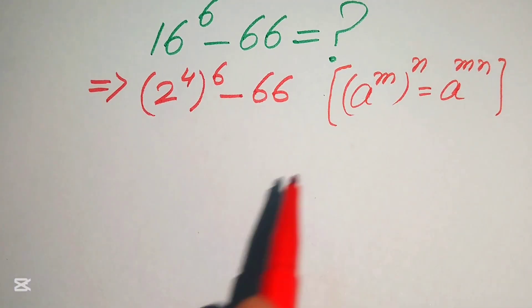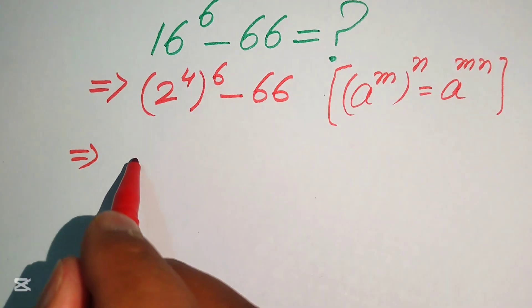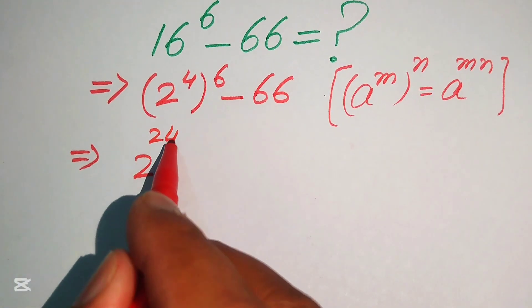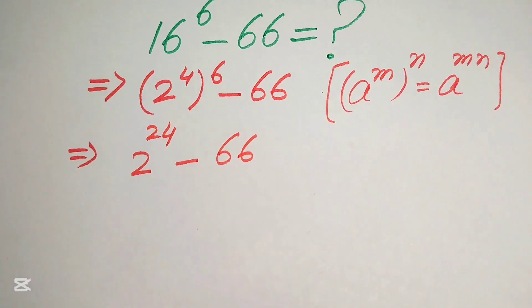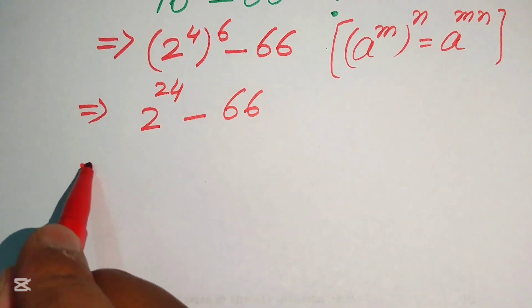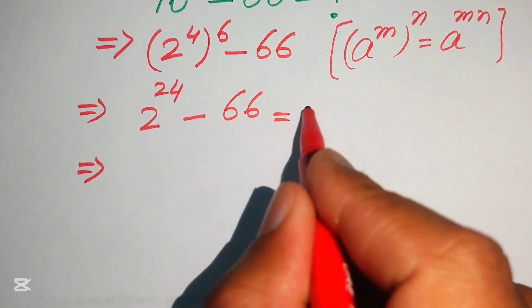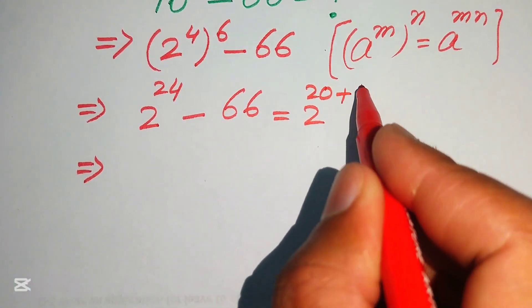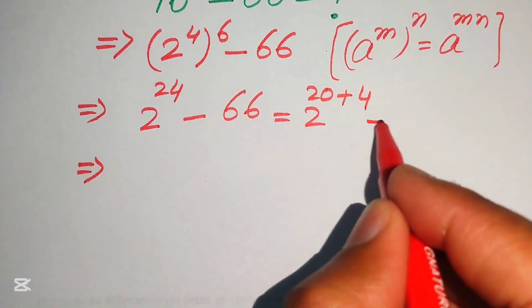According to this exponent law we multiply the two exponents, and it is written as 2 to the power of 24 minus 66. Now we further break this 24 and rewrite it as 2 to the power of 20 plus 4, since 20 plus 4 equals 24.